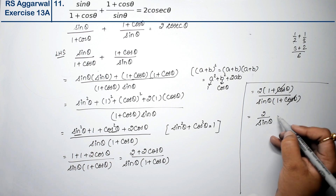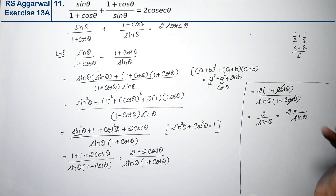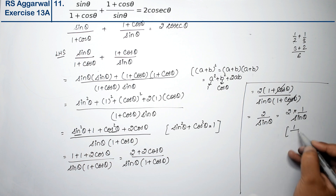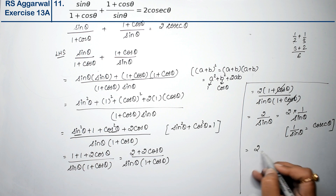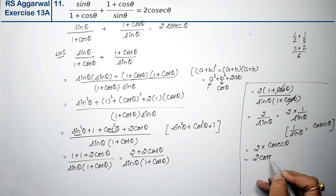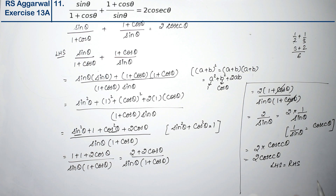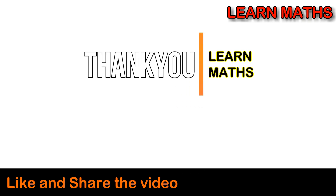So we get 2 upon sin theta, which we can write as 2 multiplied by 1 upon sin theta. And 1 upon sin theta is cosec theta. So we get 2 cosec theta, which is what we needed to prove. Hence, left-hand side equals right-hand side. Thank you — if you understood the step-by-step solution, please subscribe to my channel and share it with your friends.